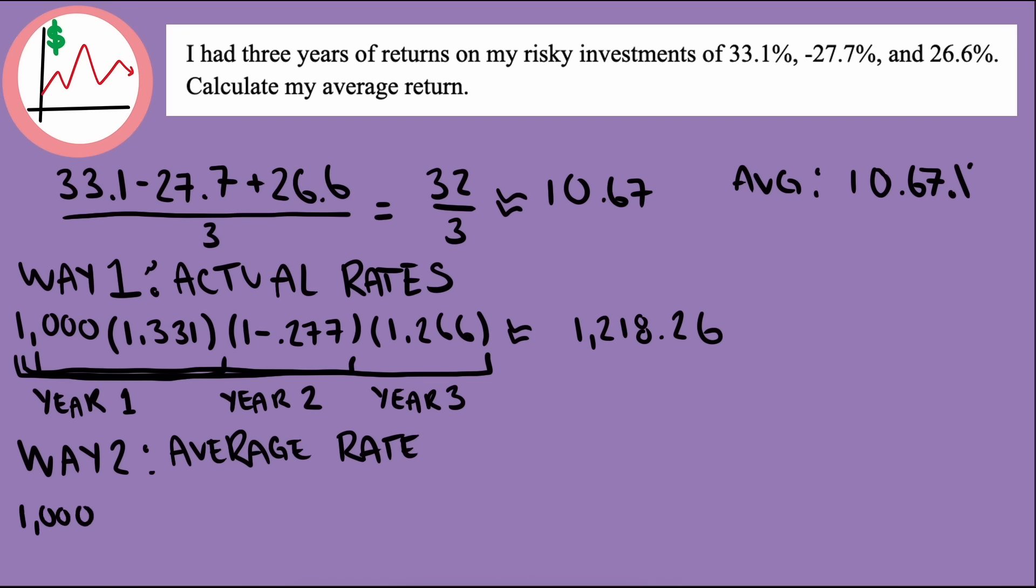Now we can do a similar calculation, but with the average rate we calculated. Instead of the three different returns, we calculate each year with a single average value, and we get something different. $1,355-ish dollars.